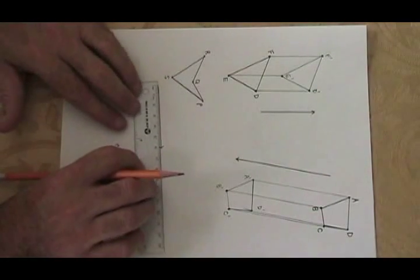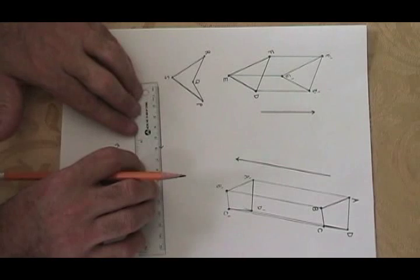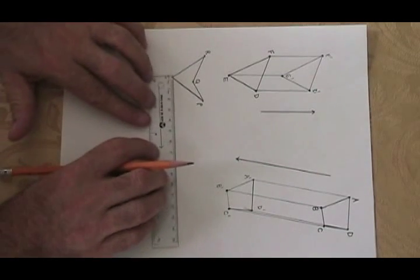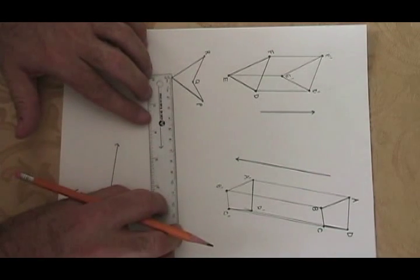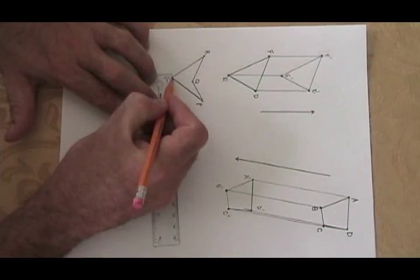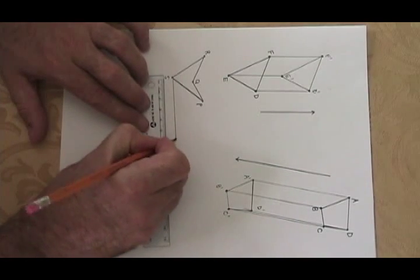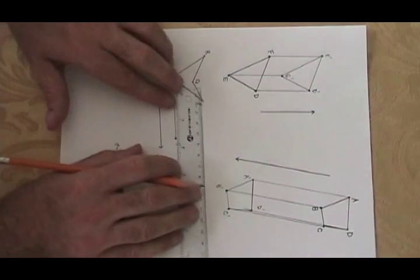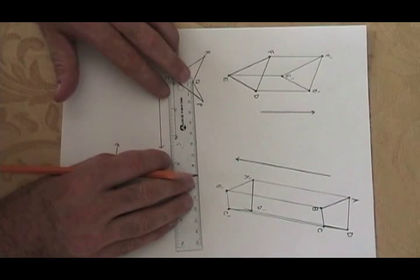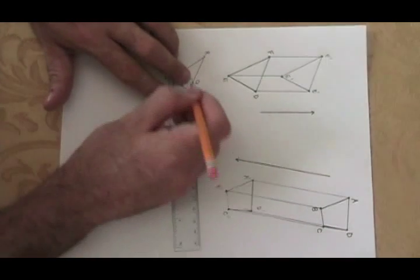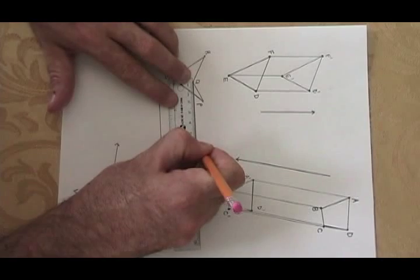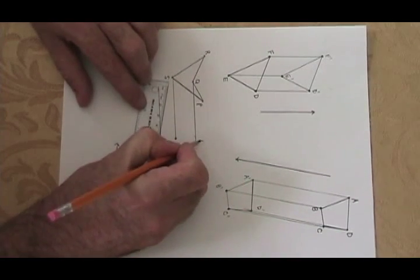In PQRS, the translation line is 5.8 centimeters long. And I'm using the same technique. 5.8 centimeters. 5.8 centimeters, S prime. Q. 5.8 centimeters.